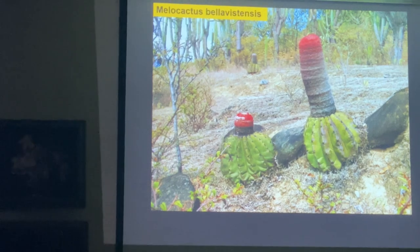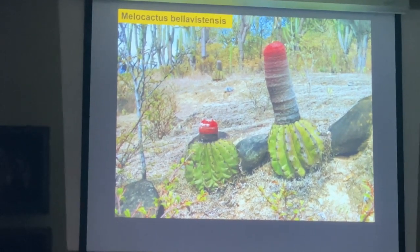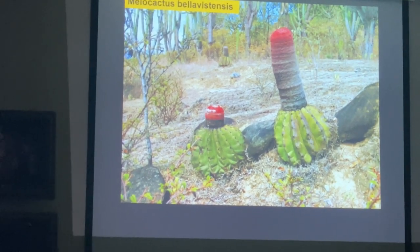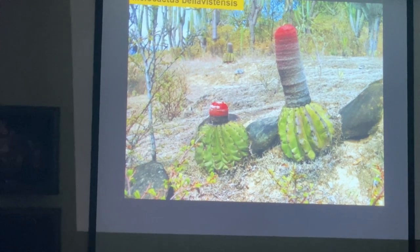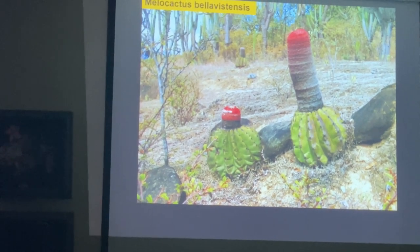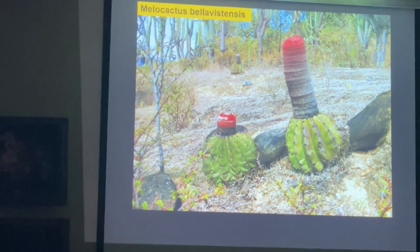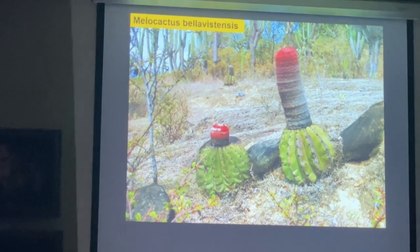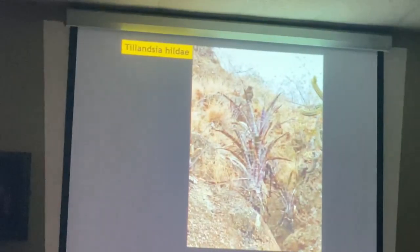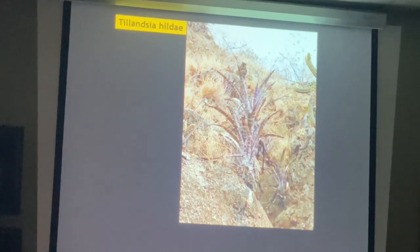Most Melocactus grow in Brazil, but they reach all the way up to Cuba and all the way down to Paraguay and Bolivia, with only two species in Peru that have been split — so there are a lot of names, but that's basically one of them.